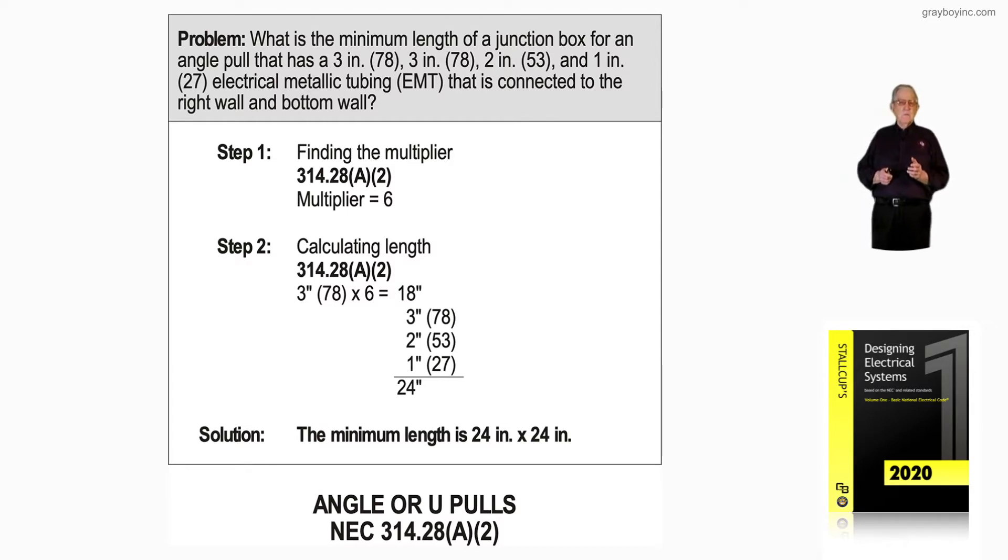But still, the problem is asking us a question. What is the minimum length of a junction box for an angle pull that has a 3-inch, 2-inch, and 1-inch conduit that we would have there? So, based upon that information, we can make the calculation. Step 1: